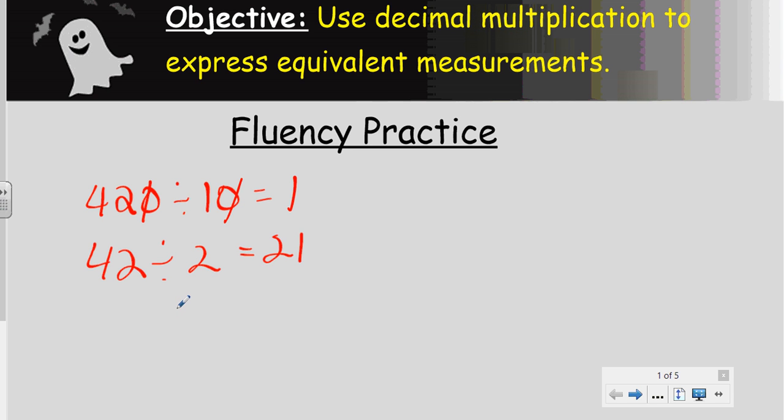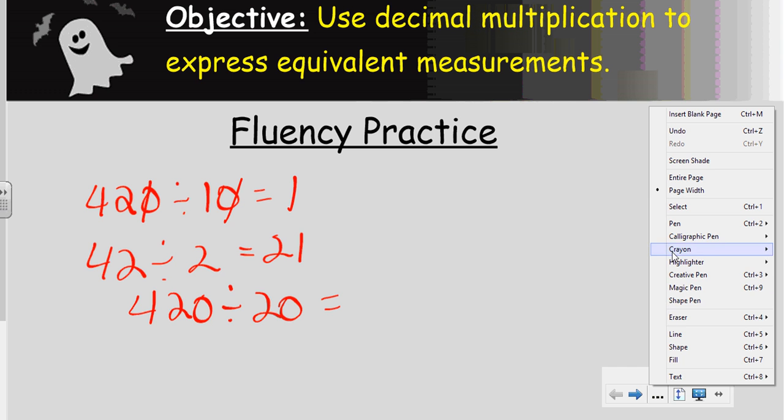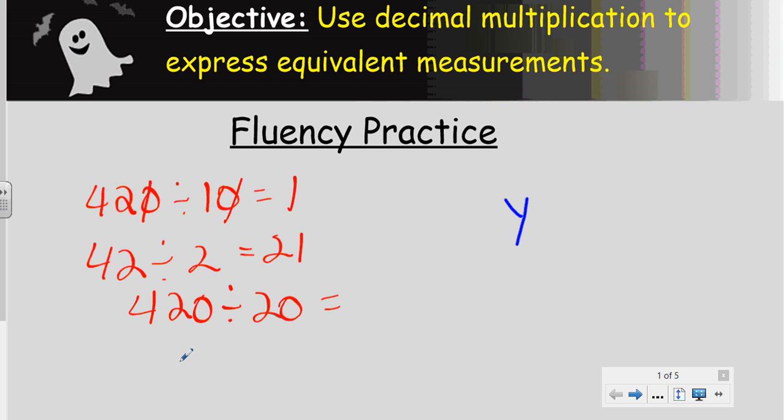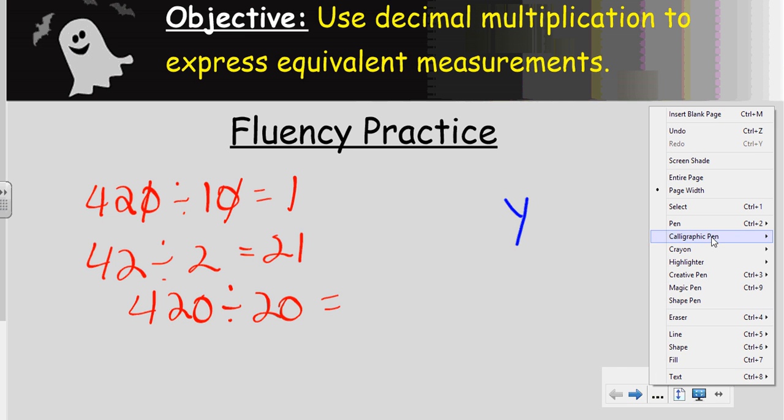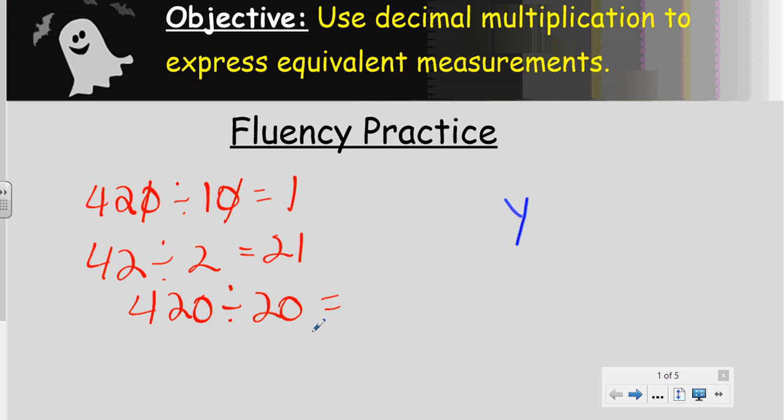Let's do this one: 420 divided by 20. What's happening here? Now you look at this, you can see we still have that power of 10 that we can take out. You can see the same power of 10, so let's take that out.